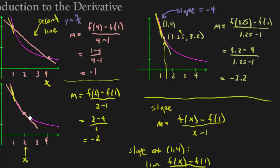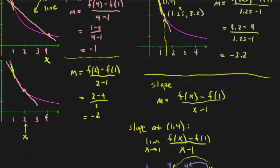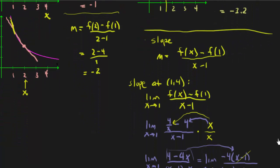What we did here is we actually pretty much computed the derivative. Those were all slopes of secant lines, but when we took the limit, that is our derivative.